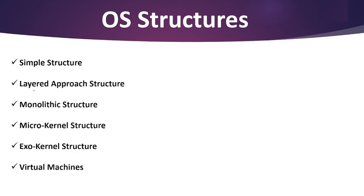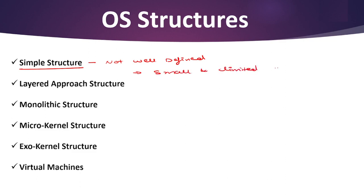Let's start with the simple structure first. It is the simplest operating system structure and it is basically not well-defined, meaning it can only be used for small and limited systems. In this type of structure, the interfaces and levels of functionalities are always separated. From an examination point of view, this particular point is very important: in the simple type of operating system structure, the user interfaces and the levels of functionalities are very well separated.